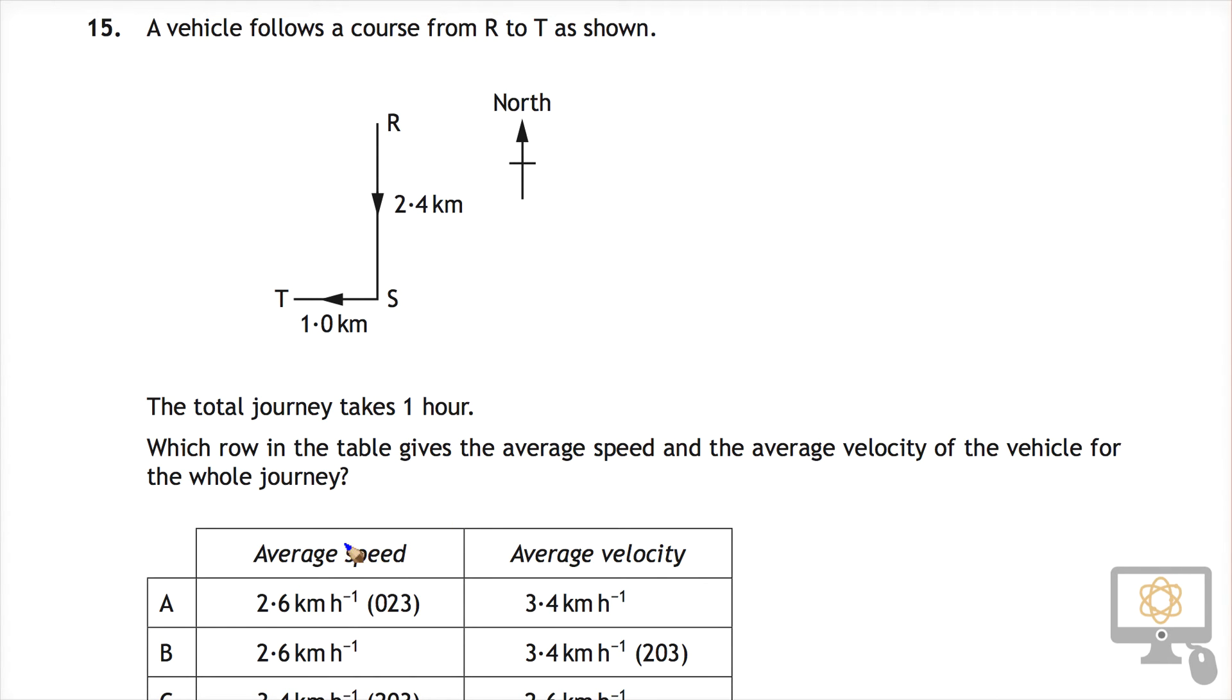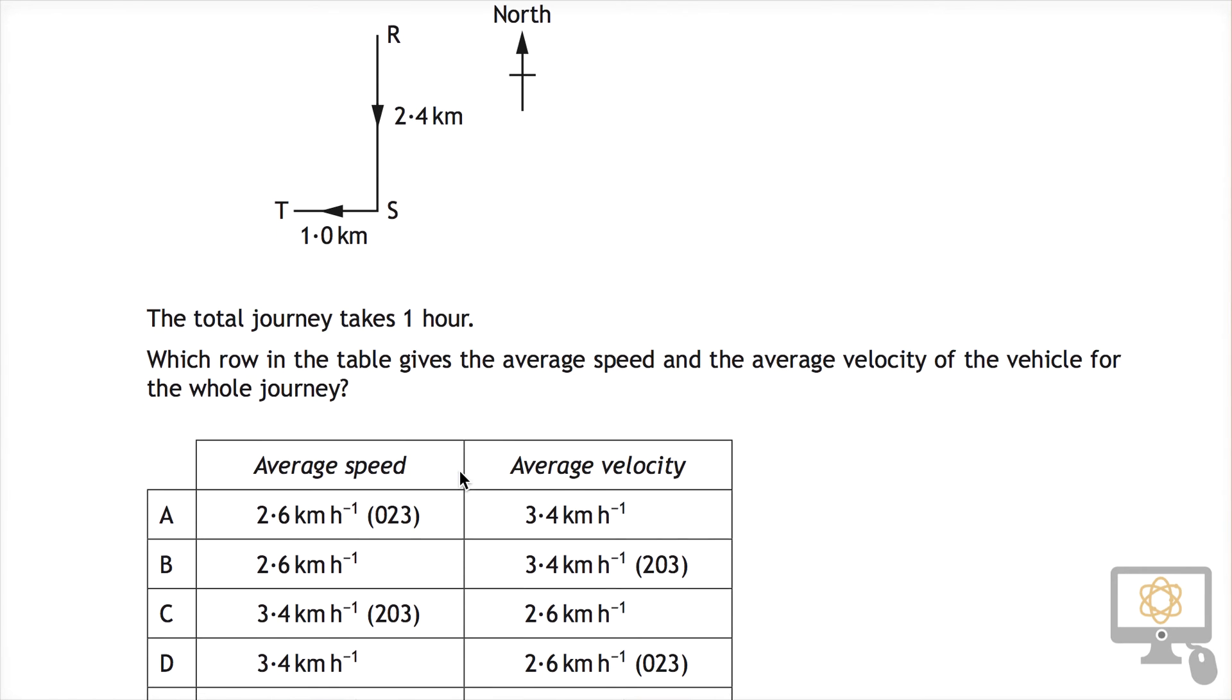So we're trying to find correct values for the average speed and average velocity for the journey. Let's have a look at the data we've got on the table.